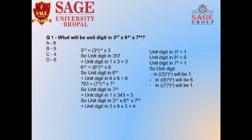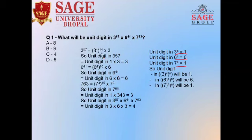First we consider 3 to the power 57. By the concept discussed in the previous video, we divide 57 by 4. So 4 into 14 is 56, and only 1 is the remainder. So the expression becomes 3 to the power 4, to the power 14, into 3. We know 3 to the power 4 is equal to 1, so the answer of this expression is 1 into 3. Therefore, the unit digit of 3 to the power 57 is equal to 3.